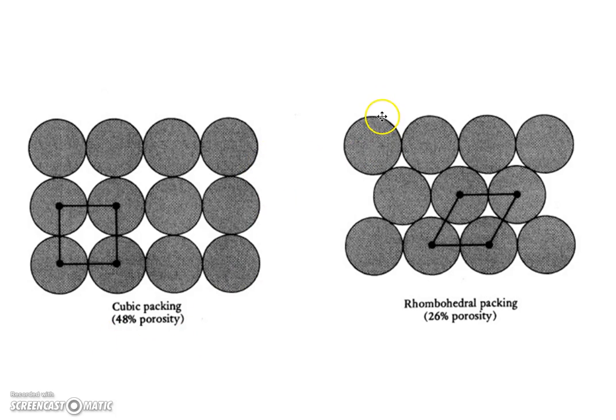If those particles are squeezed or compressed so that they're closer to each other, and we do the same thing, we put a dot in the center of four of them and we connect the dots, this time we get a rhombus, not a cube. So this is called rhombohedral packing, and the porosity here is only 26%. So you can see that the more tightly packed the particles are, the lower the porosity.